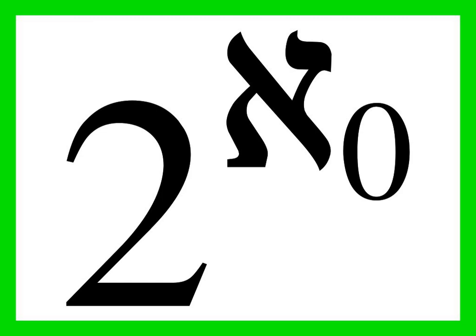He also proved that c is 2^ℵ₀, the cardinality of the power set of the natural numbers.